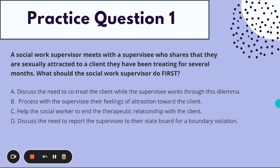Let's jump into our first question. Practice question number one: A social work supervisor meets with a supervisee who shares that they are sexually attracted to a client they have been treating for several months. What should the social work supervisor do first? A) discuss the need to co-treat the client while the supervisee works through this dilemma. B) process with the supervisee their feelings of attraction towards the client. C) help the social worker to end the therapeutic relationship with the client. D) discuss the need to report the supervisee to their state board for a boundary violation.